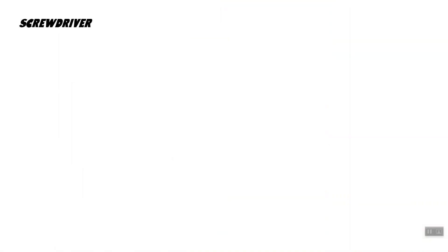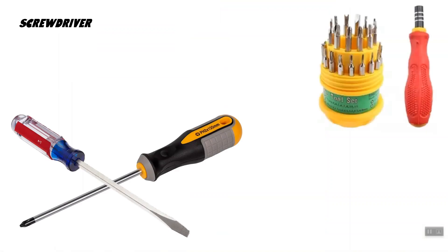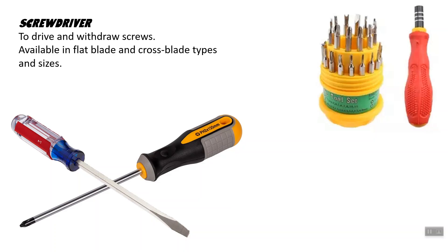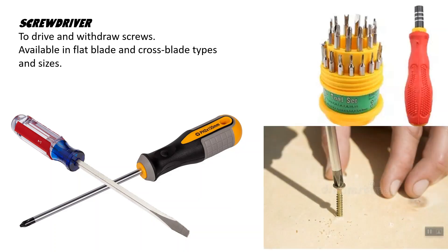Another driving tool is the screwdriver. Screwdrivers are available in different types, as you can see in the picture. They are used to drive or to withdraw screws from materials. They are available in flat blade and cross blade types. We also have what is called a Pozidriv, and there are ratchet screwdrivers which can be adjusted to size. As shown in the picture, it is used to drive screws into materials.